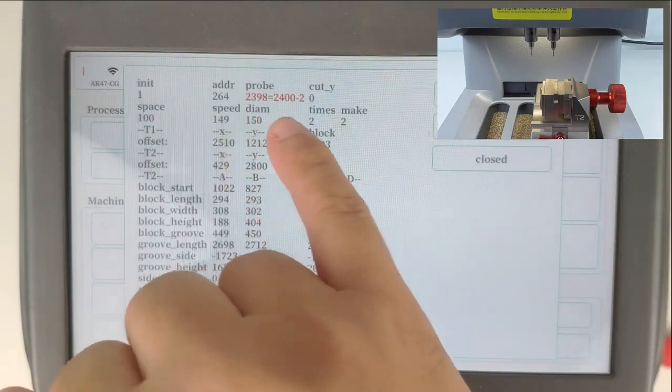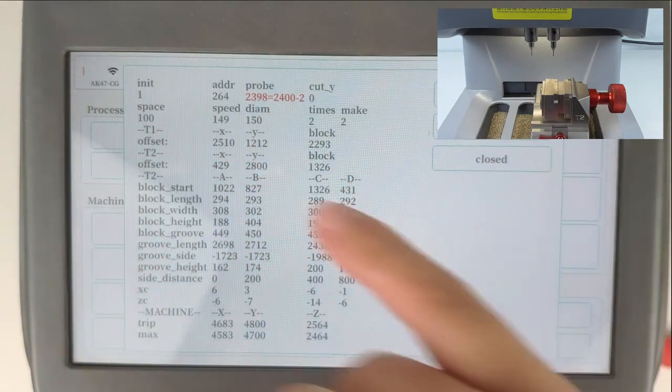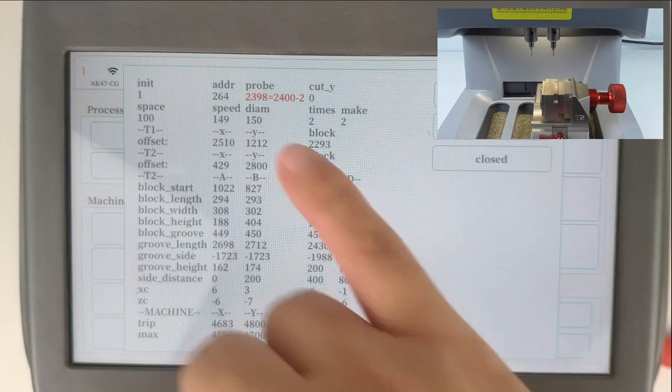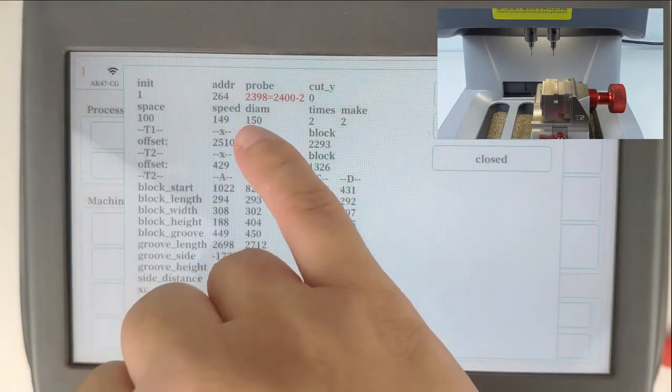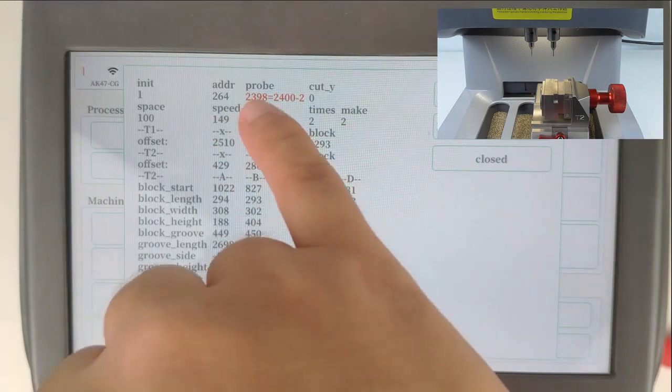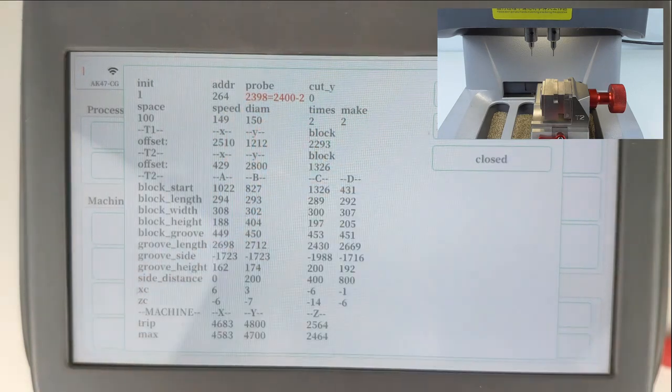You can check the probe, the green number here. Before it was 2398, and now it is 2400. Here we closed it.